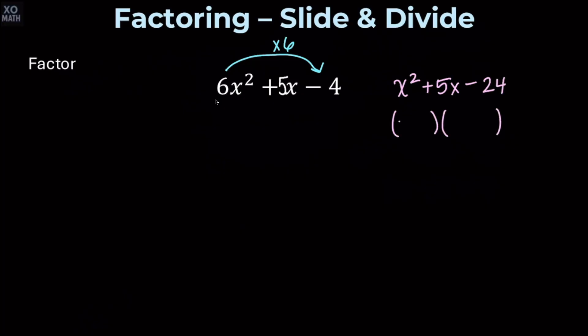Here, we're looking for two numbers that multiply to give us negative 24, but add together to give us positive 5. So one of those is going to be a positive 8, and the other is going to be a negative 3.